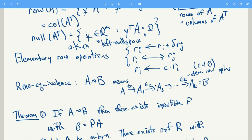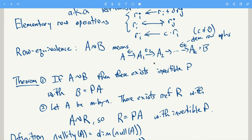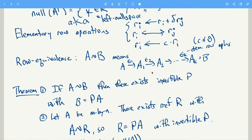And we have some theorem which says that if A is row equivalent to B, then there exists an invertible matrix P with B equals PA.